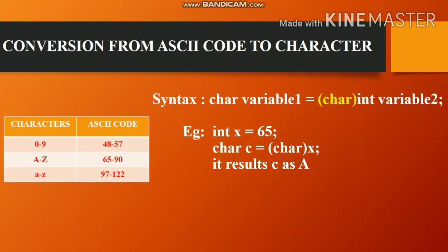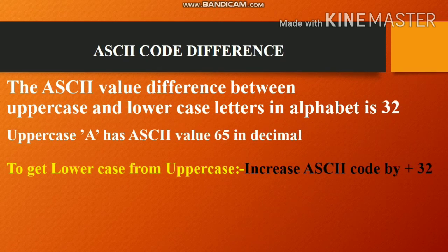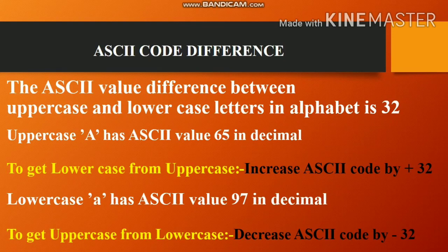The ASCII value difference between upper case and lower case letters is 32. Upper case 'A' has ASCII value 65. To get the lower case from the upper case, we add 32 to the ASCII code. Lower case 'a' has ASCII value 97. To convert lower case to upper case, we decrease the ASCII code by 32. Thanks for watching our YouTube channel and have a nice day.